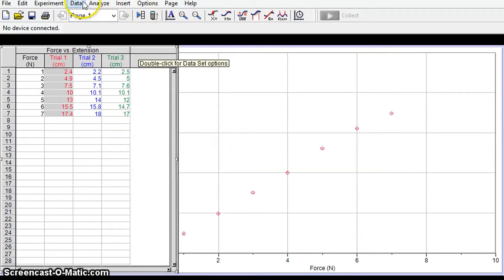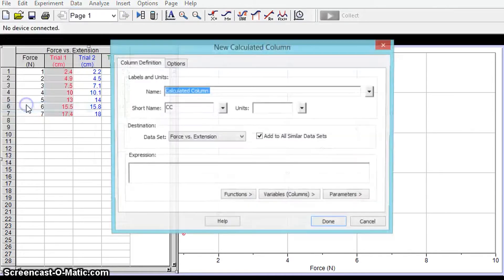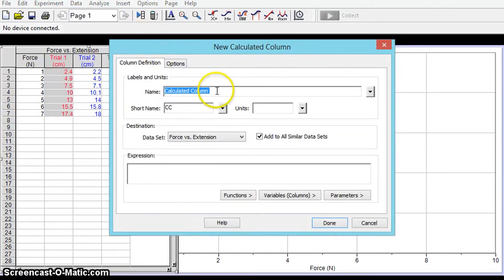Firstly I'm going to average my data, so I'm going to put a new calculated column here and I'm going to call it my average extension with a short name x and the units centimeters, and I'm going to tell the calculated column how to work out the average extension.